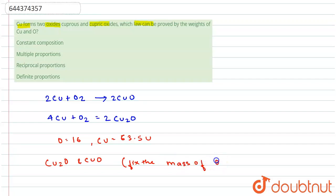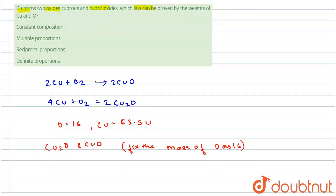...mass of oxygen as 16, then the ratio of mass of copper in both the oxides will be 2 × 63.5 is to 63.5 and 127 is to 63.5, which is 2 is to 1.